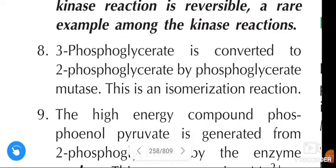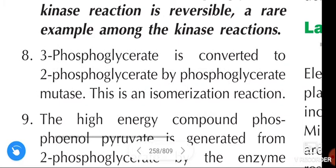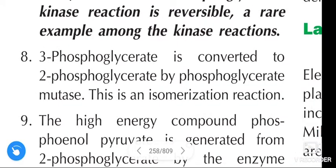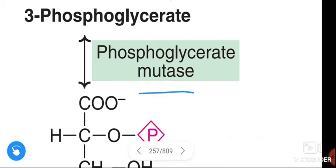3-phosphoglycerate is converted to 2-phosphoglycerate by phosphoglycerate mutase. This is an isomerization reaction.